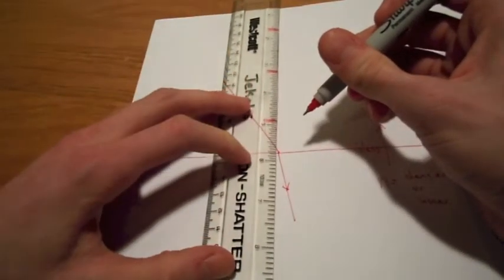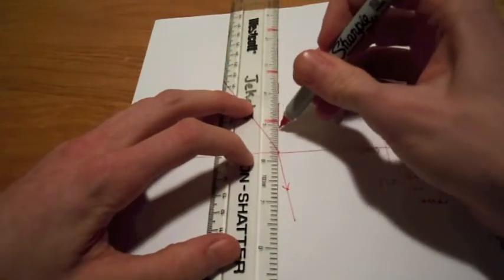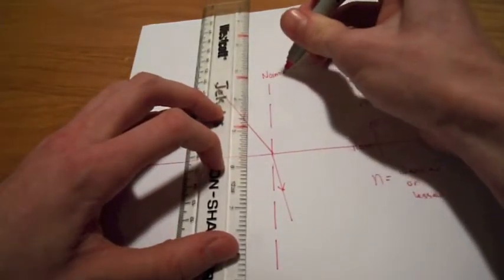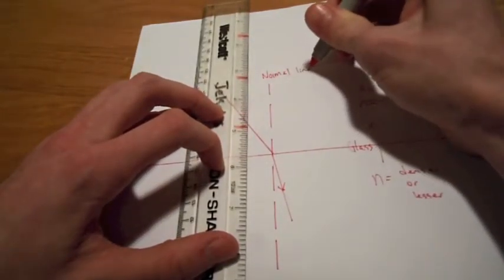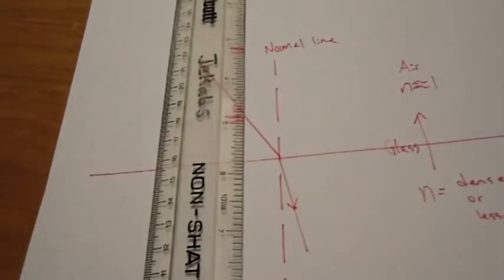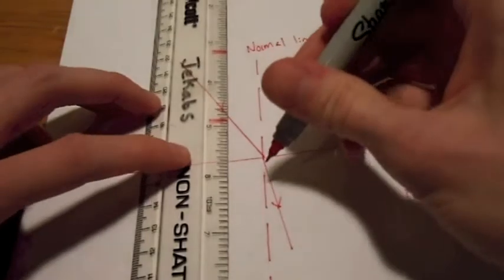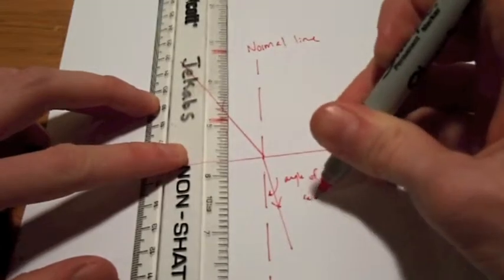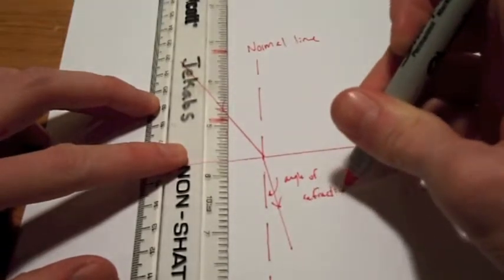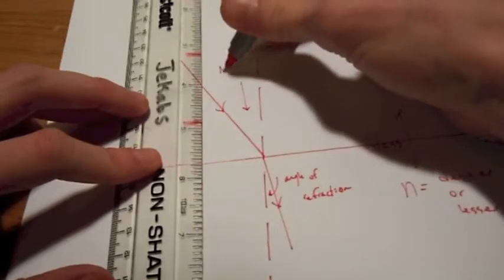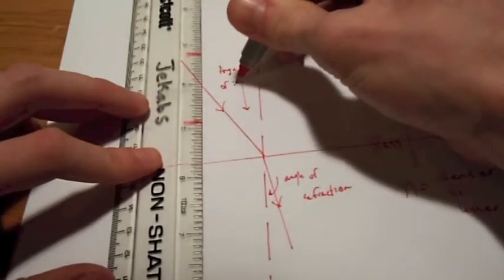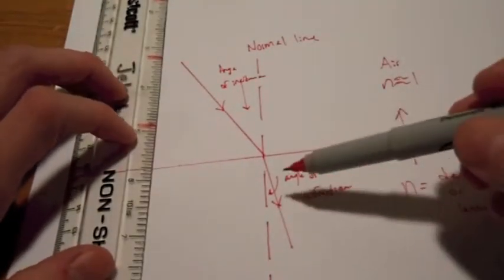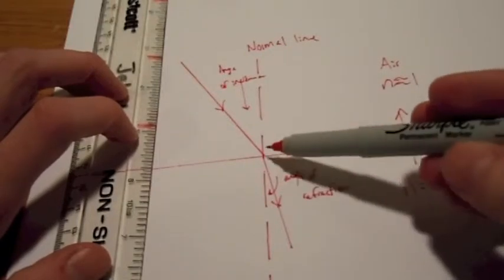To measure these angles, we have to draw a normal line. So now this down here is the angle of refraction, and this here is the angle of incidence. I don't expect you guys to be able to read that, but I'm just putting it in there. Usually this angle is going to be either smaller or bigger than the angle up here.